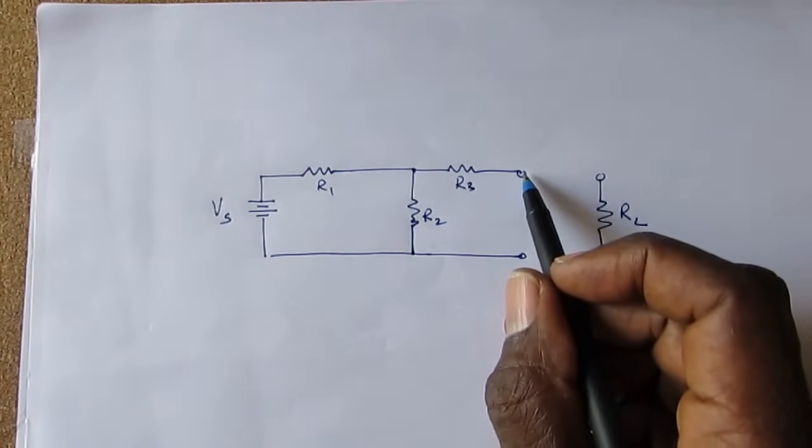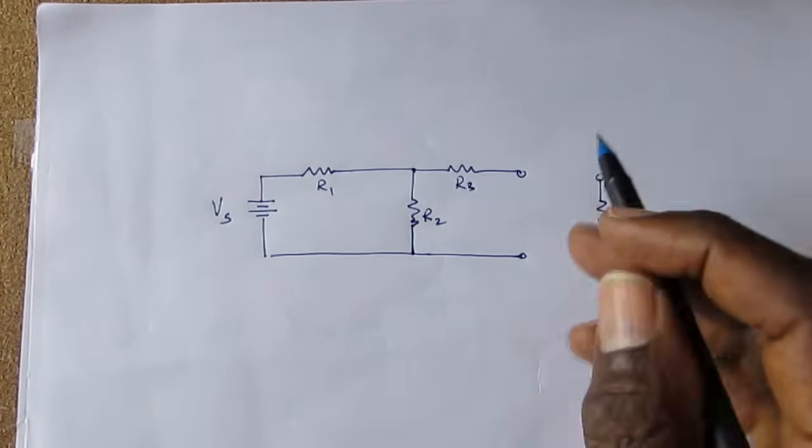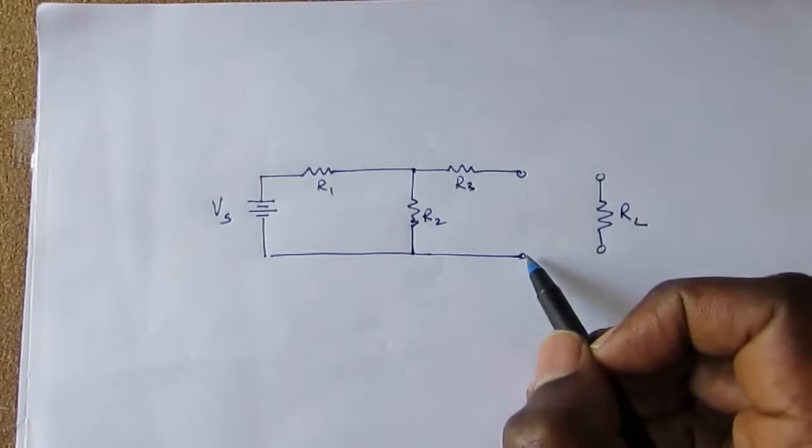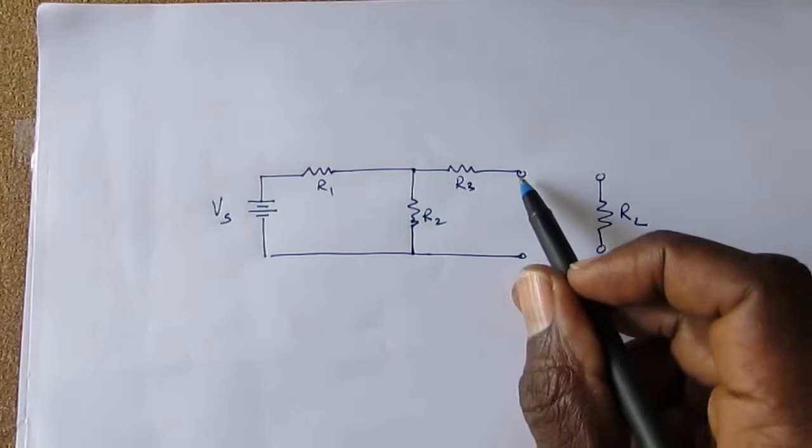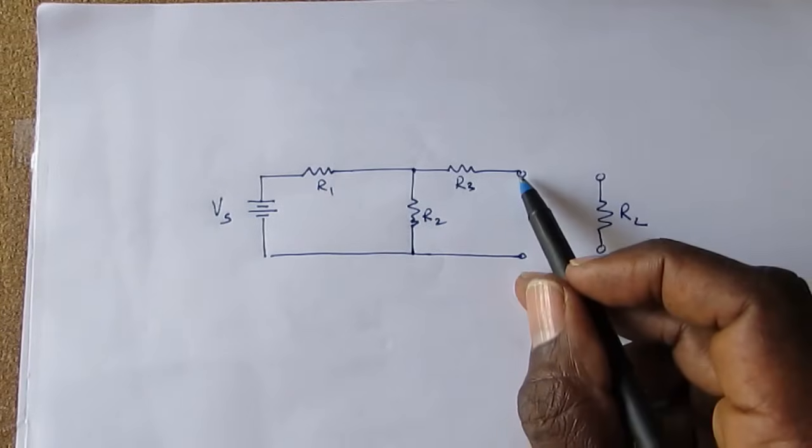We will now find the voltage that will appear across here. In other words, if you were to put a voltmeter across here, what voltage would we get? That voltage would be the Thevenin voltage.